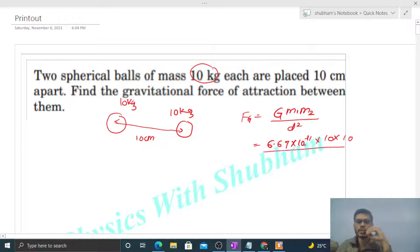This is your m1 and this is your m2, divided by distance squared. That will be 0.1 squared—10 centimeter means 0.1 meter. So just solve it and check how much you are getting.